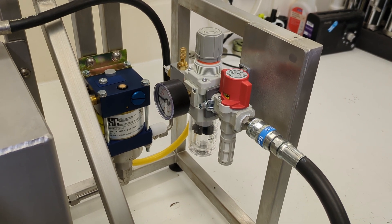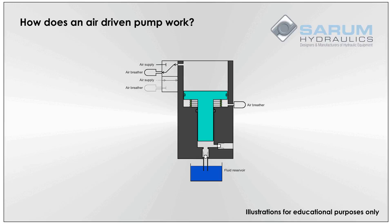Let's take a look at the parts inside an air-driven pump. The air-driven pump has an air section and a hydraulic section. These two sections are separated by seals.